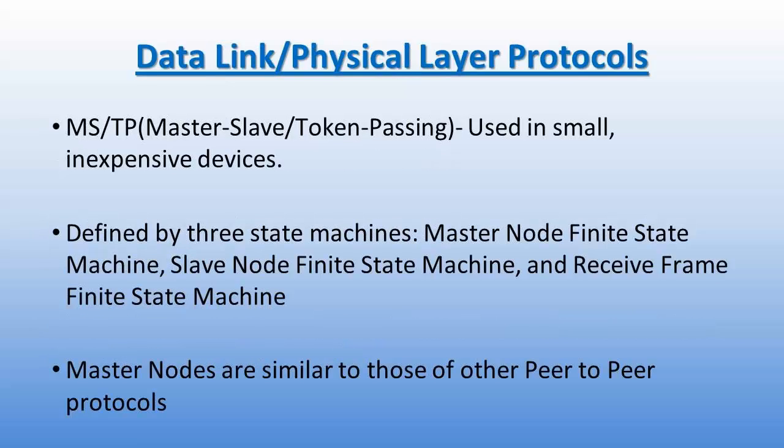BACnet MSTP is a data link protocol unique to BACnet, commonly used as a field bus. The acronym MSTP stands for Master Slave Token Passing. This protocol uses EIA-485 as the physical layer and is defined using three state machines: Master Node Finite State Machine, Slave Node Finite State Machine, and Receive Frame Finite State Machine.